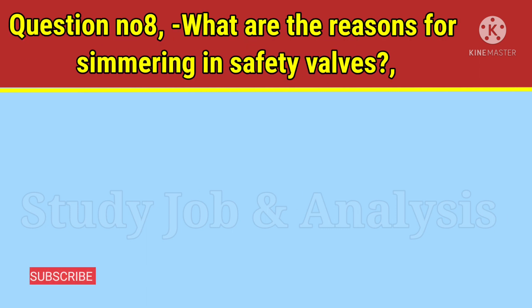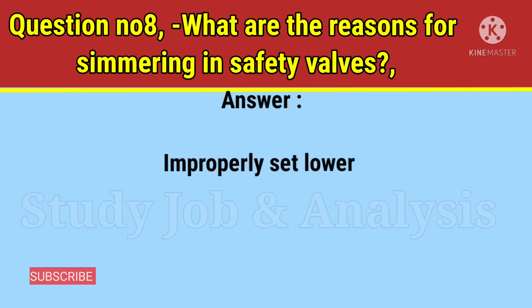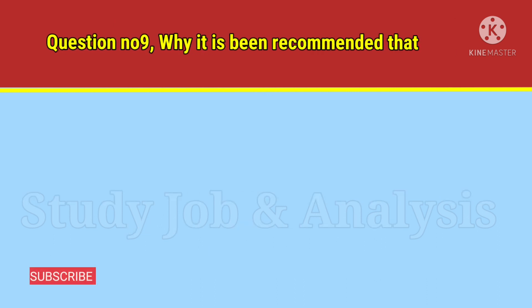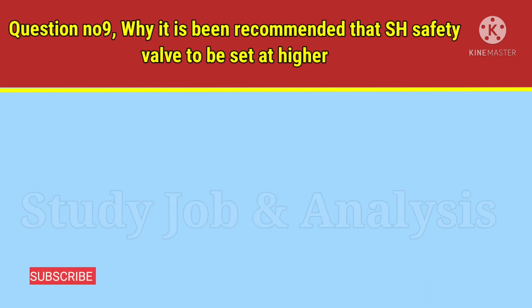Question number eight: what are the reasons for simmering in safety valves? Answer: Improperly set lower ring, holding the boiler pressure at or very near to the set pressure of the valve, and maintaining a higher drum level during lifting of the boiler safety valve.